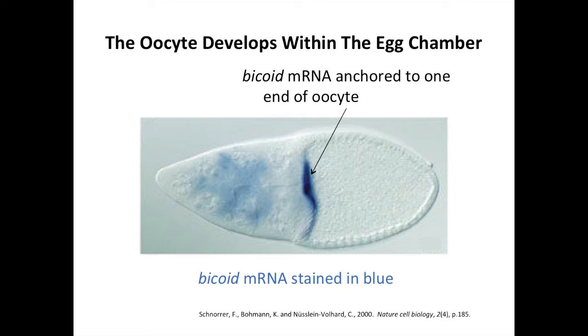The end of the oocyte at which the Bicoid messenger RNA is tethered will become the anterior of the embryo, and eventually the location of the head of the larvae and the fly.